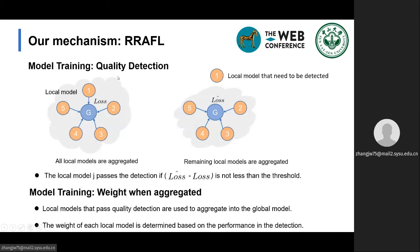Although reputation is considered, participants' reliability and data quality cannot be fully guaranteed. Therefore it is necessary to filter out bad local models through quality detection. In each round, all local models are aggregated into a global model and we get the loss on the validation set. We then remove a local model that needs to be detected, aggregate the remaining local models into another global model, and calculate the loss-hat. If the difference between loss-hat and the loss is not less than the threshold, then this local model passes the detection. Local models that pass quality detection are used to aggregate into the global model, and the weight of each local model is determined based on its performance in the detection.